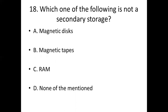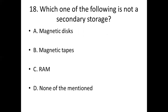Eighteenth bit: Which one of the following is not a secondary storage? Option A: Magnetic disk. Option B: Magnetic tapes. Option C: RAM. Option D: None of them mentioned. Answer: Option C — RAM.